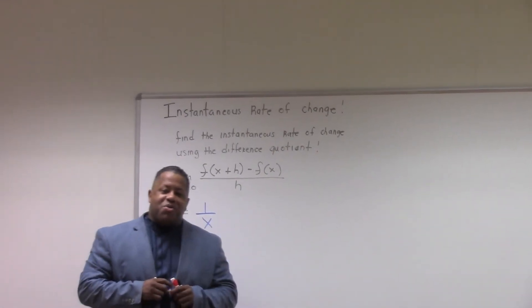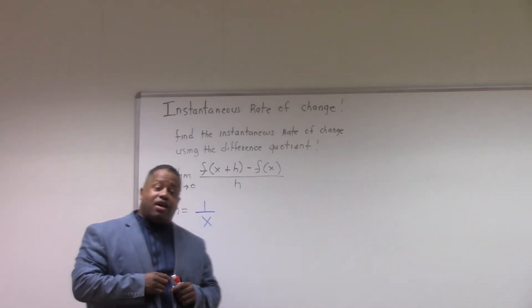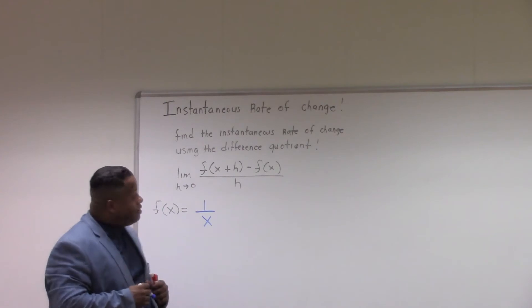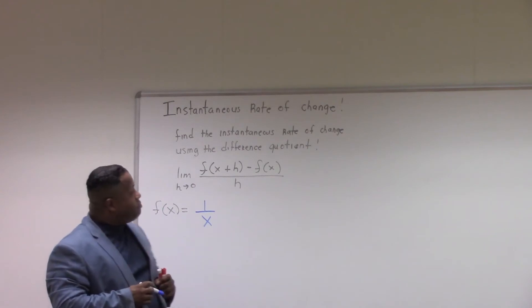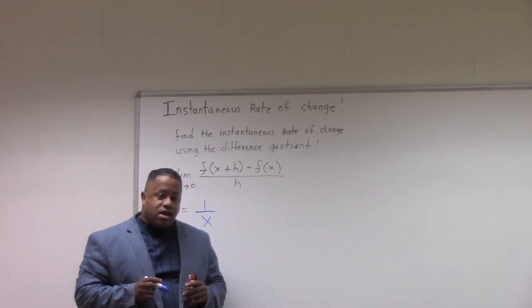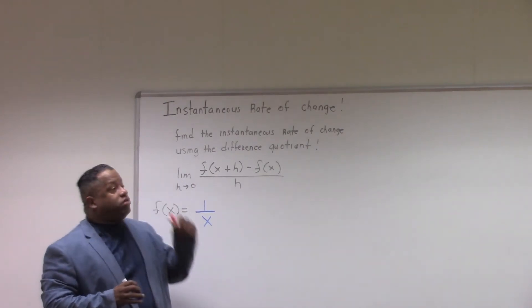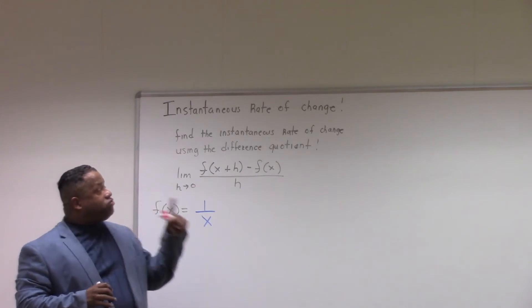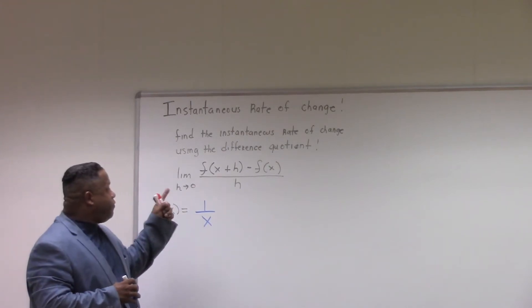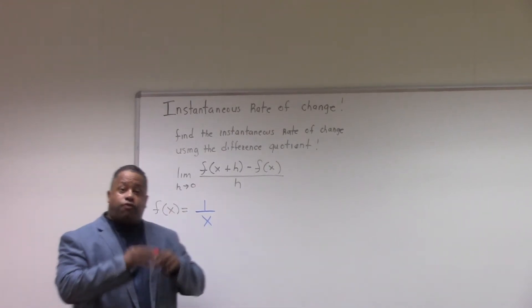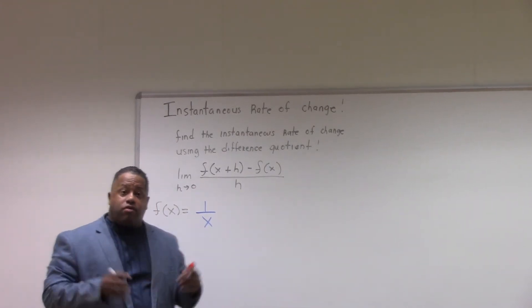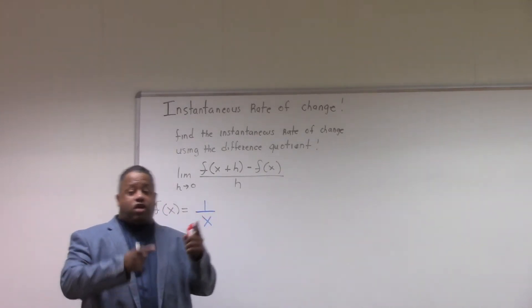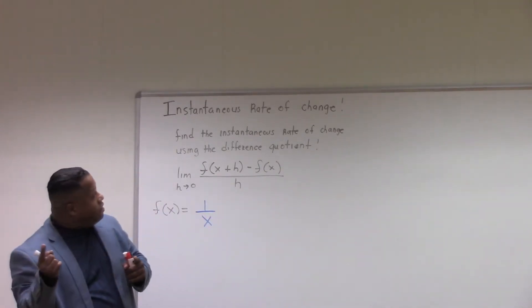Hello, we're back again. This is the professor, Daniel Fritz Mathematics. We're back to discussing the instantaneous rate of change using the difference quotient to find the derivative — also known as the instantaneous rate of change and the derivative.